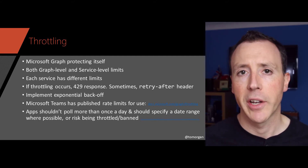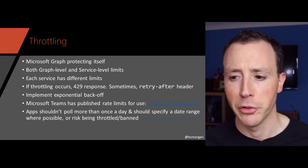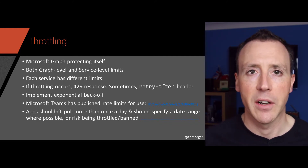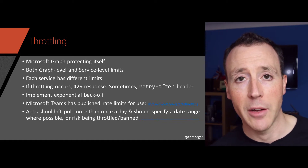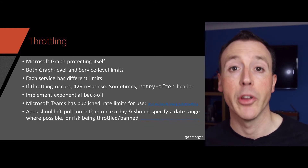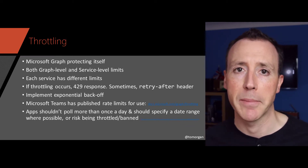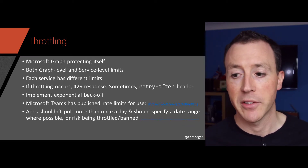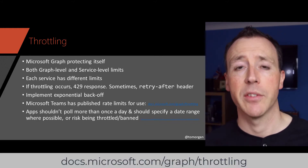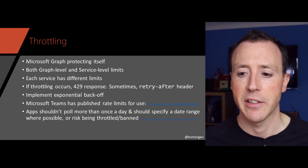If throttling does occur, you're going to get an HTTP 429 response. Sometimes you'll get a Retry-After header, but not always. You should implement standard approaches like exponential back-off. If you do get a Retry-After header, use the values in that header to determine how long to wait before trying again. Microsoft Teams is actually really good in this respect because they publish rate limits — there's a page you can go to on the web. You can see the rate limits and build your application around them to make sure you're less likely to be throttled.